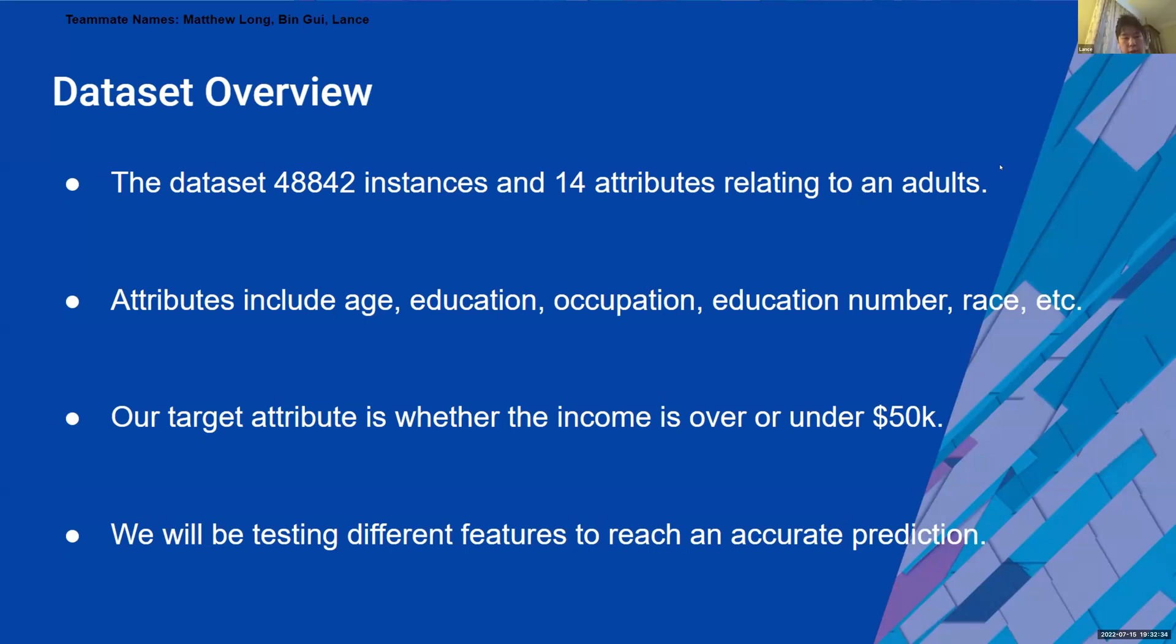So now we have our dataset. The dataset has 48,842 instances and 14 attributes relating to an adult. Our attributes include age, education, occupation, education number, and race. Also our target attribute is whether the income is over or under 50k, and we will be testing different features to reach an accurate prediction.